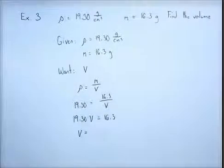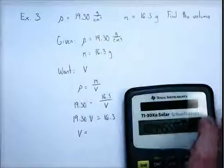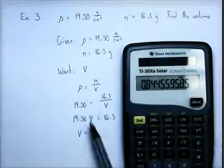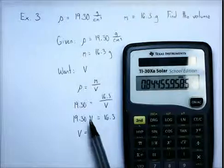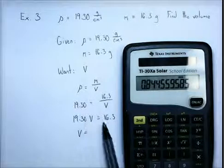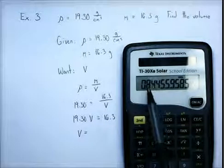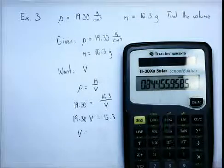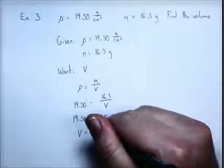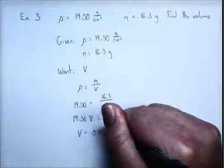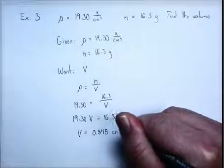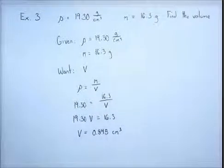And I put that in my calculator, so I have 16.3 divided by 19.3. And I get this number. And now again, we have to be careful with our significant figures. In this division problem, 16.3 has three significant figures. 19.30 has four. We have to round our answer off to have three significant figures, which means we're going to have 0.84. And then we round off this four, and it's going to round up to five. So our answer is that the volume would be 0.845. And then again, the volume unit and the density is cubic centimeters. So our volume is 0.845 cubic centimeters.